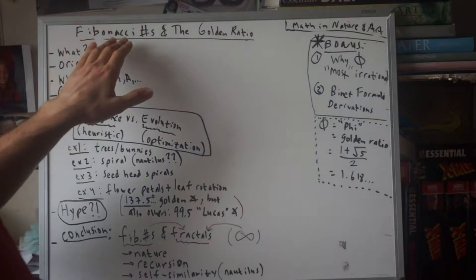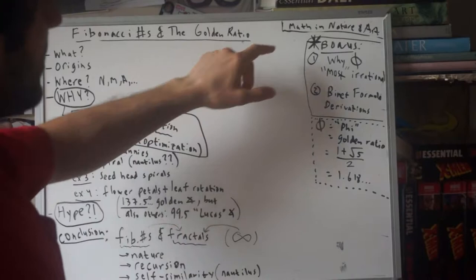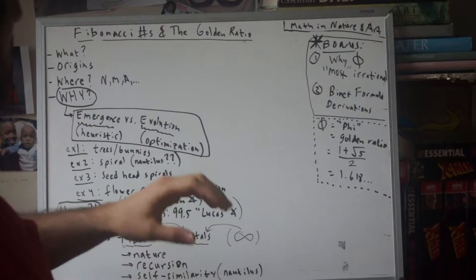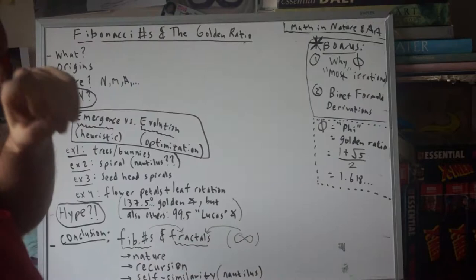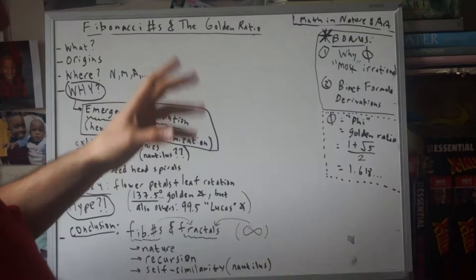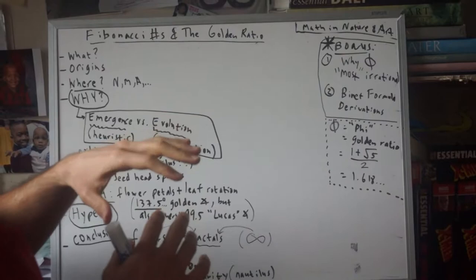Welcome back to the Art of Math. Today we're going to go over Fibonacci numbers and the golden ratio. This continues our math, nature, and art section — we started with exploring infinities, and today we're going to explore Fibonacci numbers and the golden ratio, tying in those infinity concepts when we look into fractals in a future video.